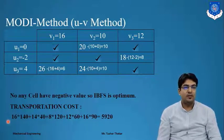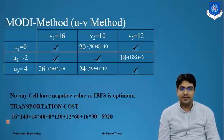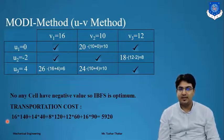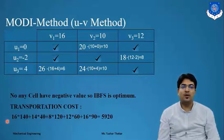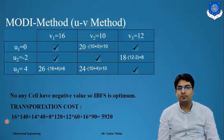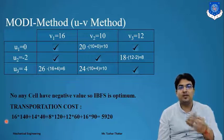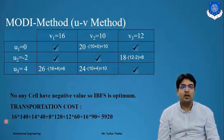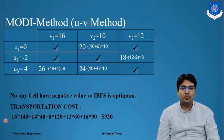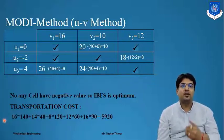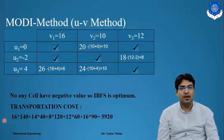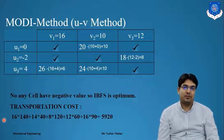To summarize the Modi method: first check for degeneracy. After checking degeneracy, make a table considering only allocating cells and form equations in U and V components. Take U1 equals 0 and find all other values. Then put all those values into the next equation using non-allocating cell values. If all resulting values are non-negative, the IBFS is the optimum value.